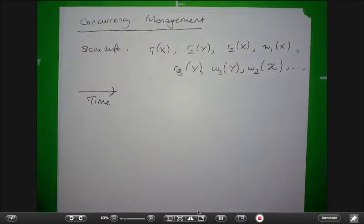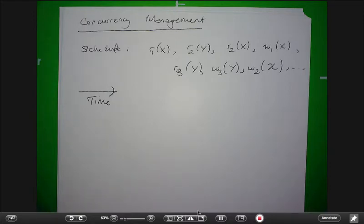The main thing we care about is whether the schedule is a good schedule or a bad schedule. A good schedule is one where we can say the effects are the same as a serial schedule. Any serial schedule is good, but as long as the effects of a schedule are the same as a serial schedule, this is a good schedule — which we call a serializable schedule.